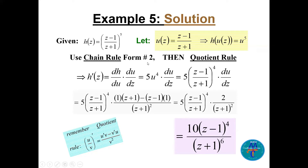Using chain rule form number two: h prime = dh/du times du/dz. The outer derivative gives 5u^4. For du/dz, since u = (z−1)/(z+1) is a quotient, we apply the quotient rule: (u/v)' = (u'v − v'u) / v².